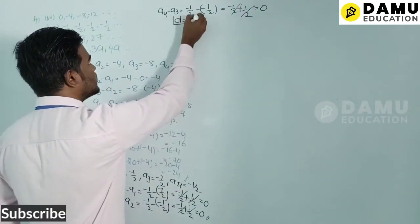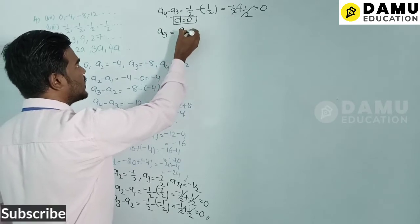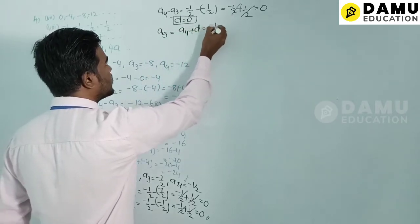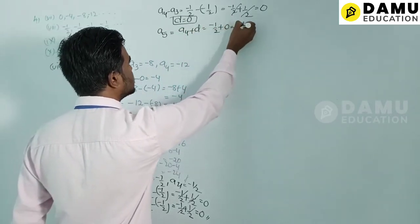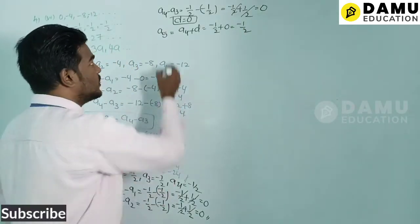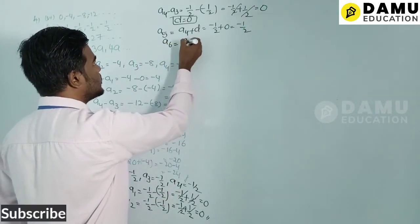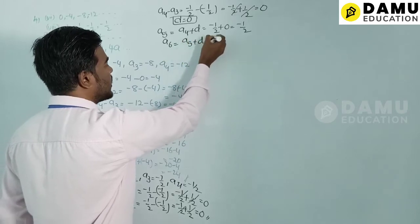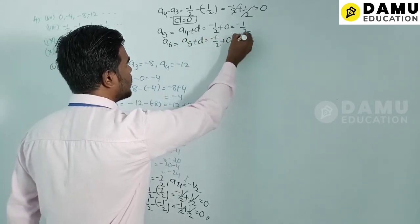With d = 0: a5 = a4 + d = −1/2 + 0 = −1/2. Then a6 = a5 + d = −1/2 + 0 = −1/2.